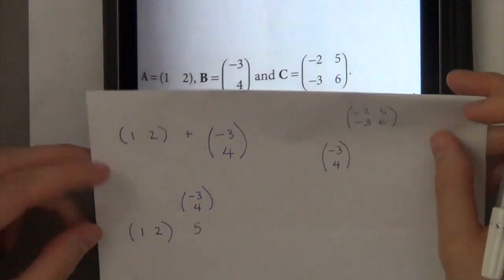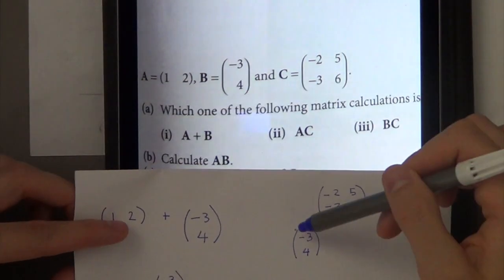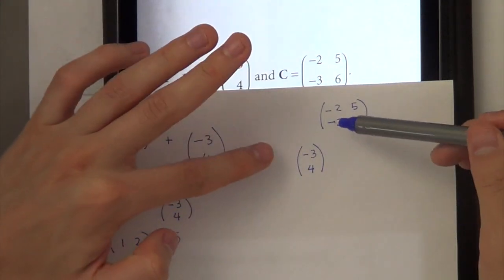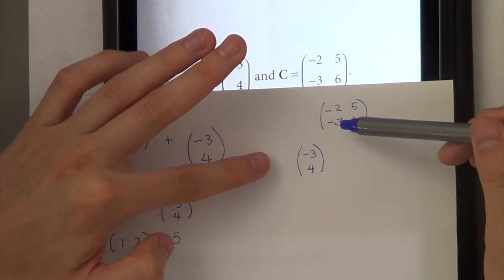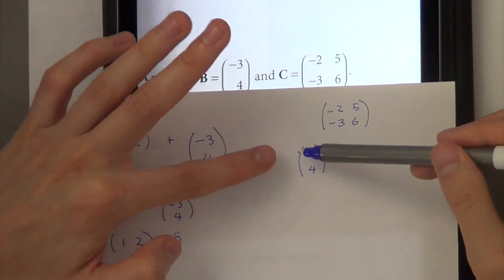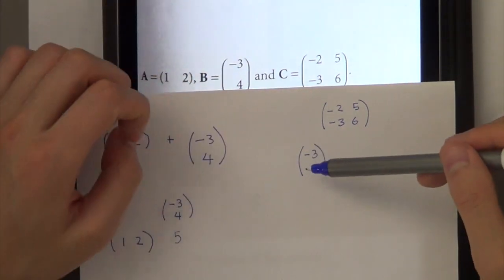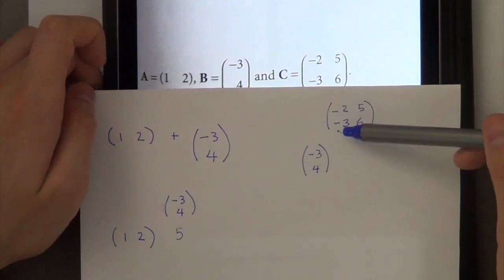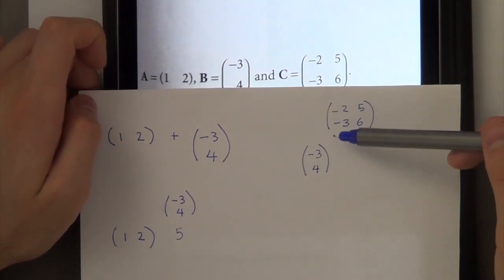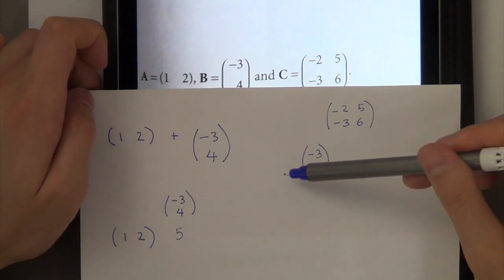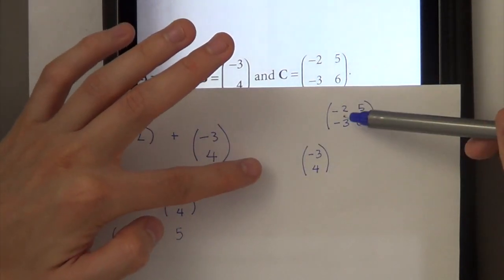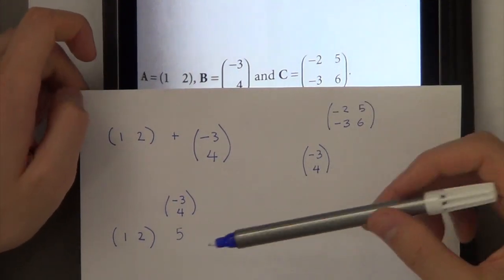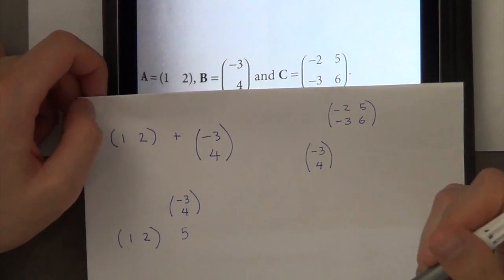Is B times C possible? Well, B is this and C is this. No, because in order for this to work you need two numbers in a row and two coming down in a column — a 2 by 2 times a 2 by 2 will work, but this is not possible. So the only one that can work is A times C.